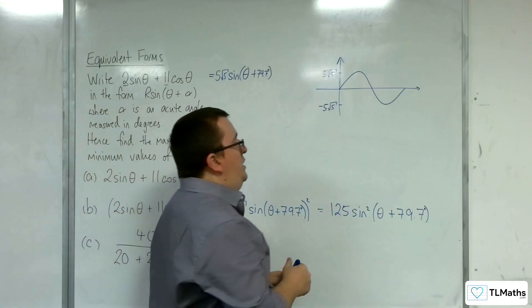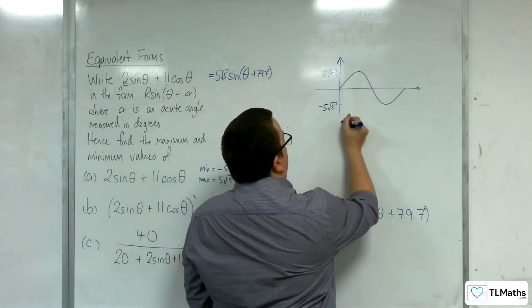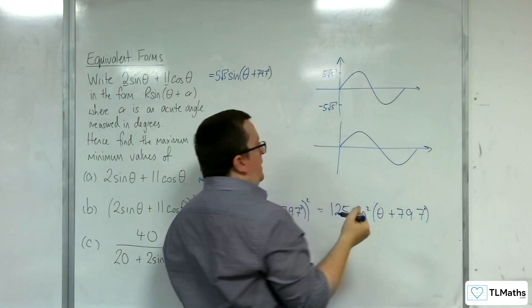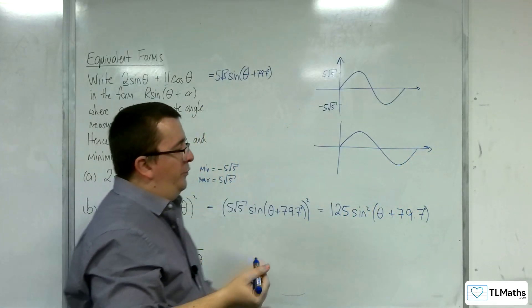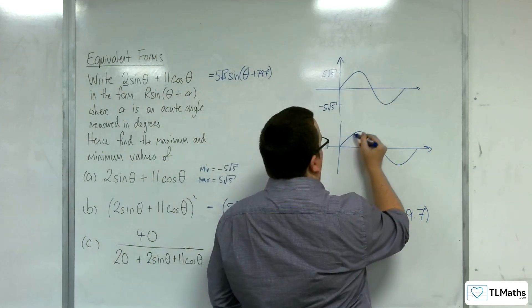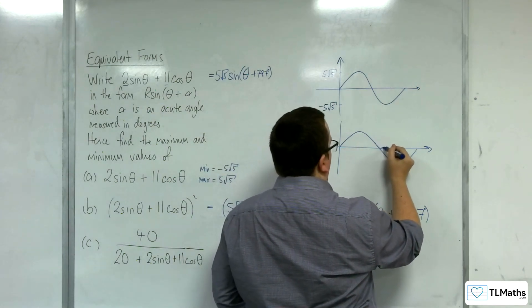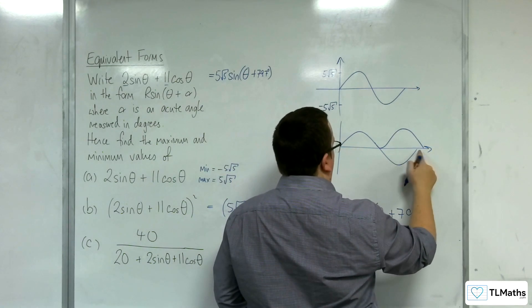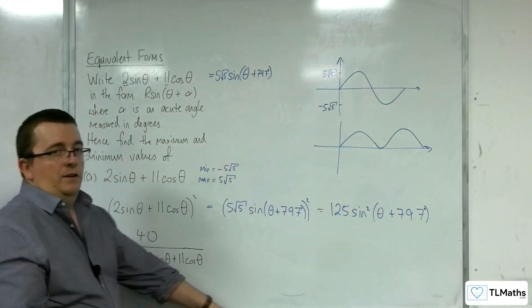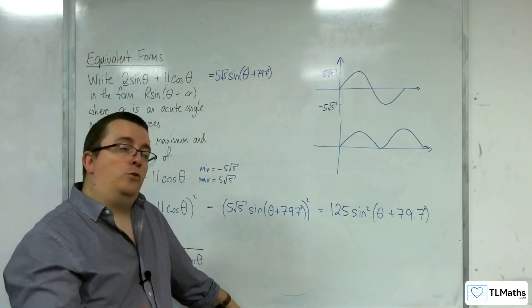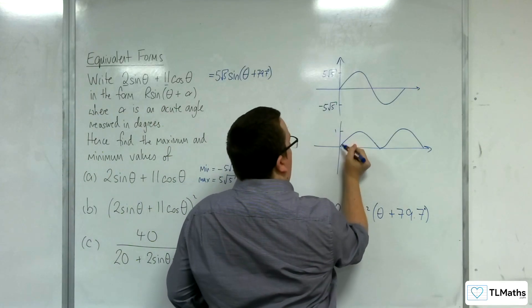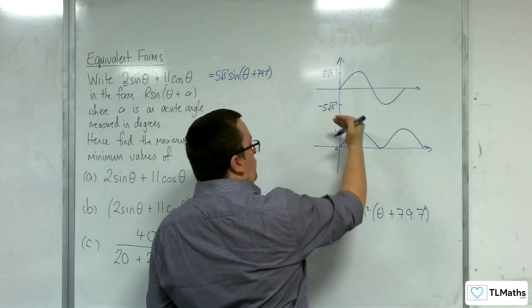So actually, the sine curve, when you've squared it, it no longer looks like this. In actual fact, because you're squaring it, the curve would actually look something like this. Because actually, the curve cannot now be negative, because it's squaring all of the values.